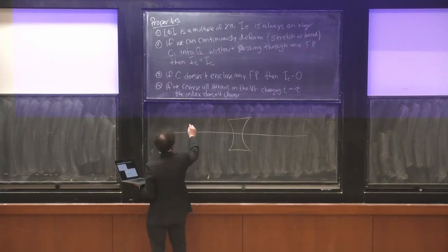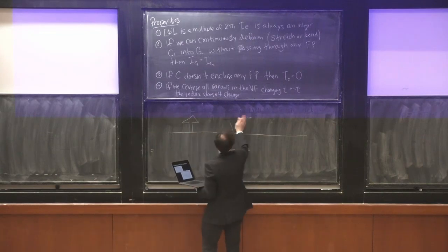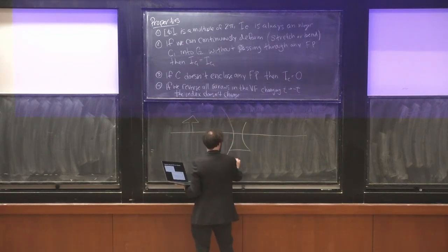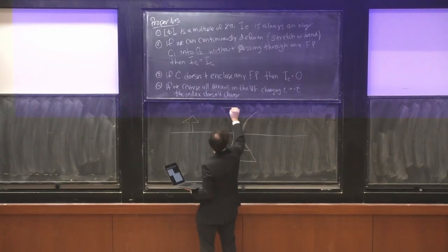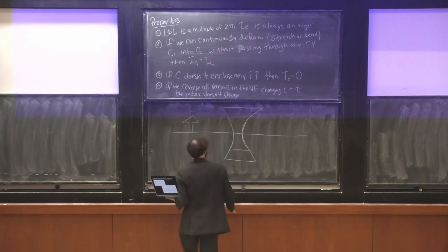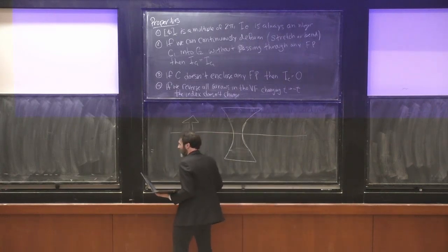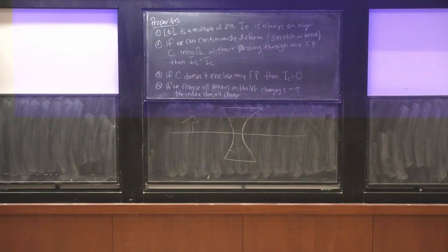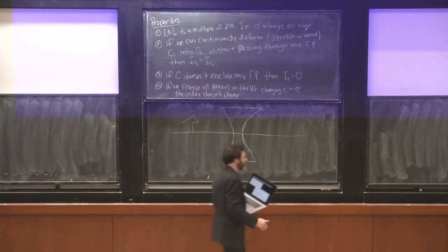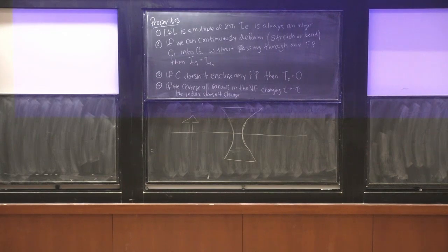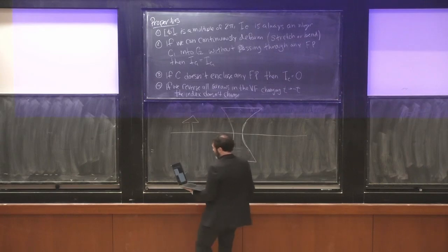We can use this magnification to actually solve for our properties of the problem. I wanted to make the ray tracing figures different colors, but we don't have any colored chalk, so we're just stuck with boring white chalk.